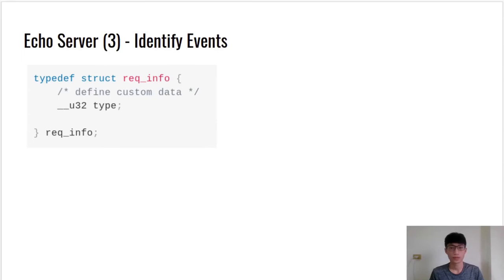Continuing from the previous page, the server transitions to the next state depending on the current state. The question is: how can the server know what type the current completion event is? Both submission and completion queue events provide a field called user_data. This field is carried from the initial request submission and can contain any information that the application needs to identify the request. The kernel will not touch this field — it is simply carried straight from submission to completion event. In this example, user_data was pointed to reqinfo.